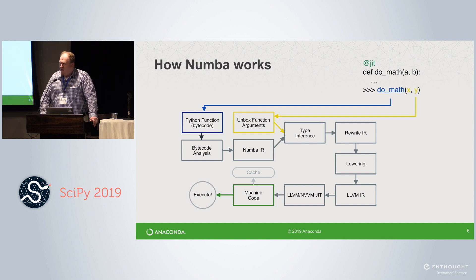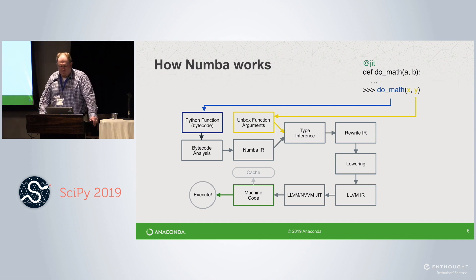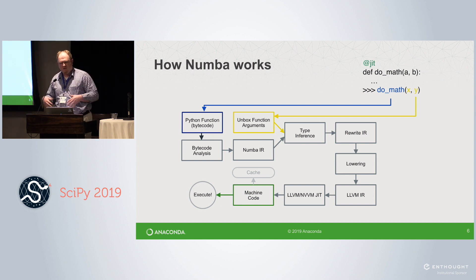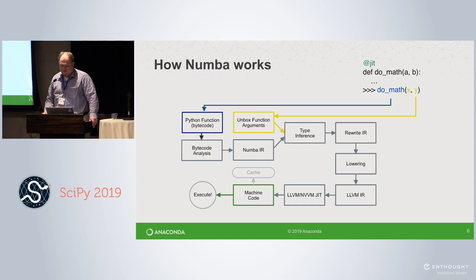LLVM is a very popular compiler library — the reason Numba exists is because we didn't have to write the back end of the compiler. All the details about optimizing low-level code and generating machine code for many different CPUs are handled in LLVM, which is also used by compilers like Clang. Once we translate your Python code to LLVM IR and run it through the LLVM back end, we have machine code which we can cache and execute. The cache is important — the next time you run through the loop, we jump straight to the end without going through all the analysis steps again.